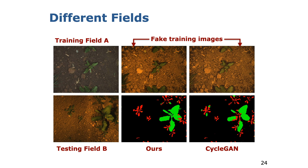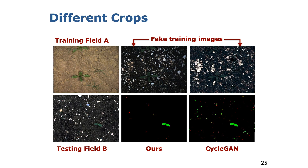The first experiment shows the domain transfer between different field environments. In the upper row you can see that our approach reliably generates images in the style of the target domain, whereas the CycleGAN baseline generator misses details in the texture as well as the semantic information for small vegetation objects. As the second row indicates, this in turn leads to a weaker crop weed classification in the target domain. The second experiment shows the domain transfer between different crops, in this case sugarbeet and sunflower. The qualitative results illustrate that our approach performs better for small vegetation objects since the semantic information is kept during translation.